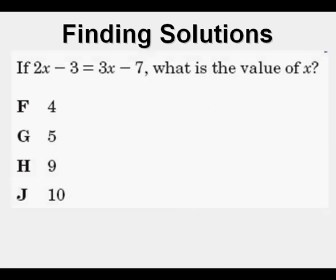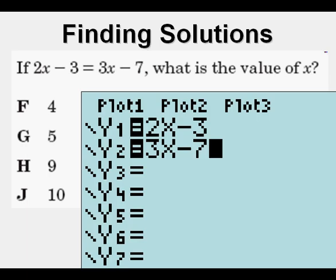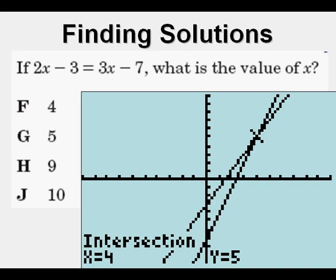The next problem is just like the last one. Enter into y1 the left side: 2x - 3, and into y2 the right side: 3x - 7. Press 2nd, Trace, 5, Enter, Enter, Enter, and we get x = 4, so we circle that as our correct answer.